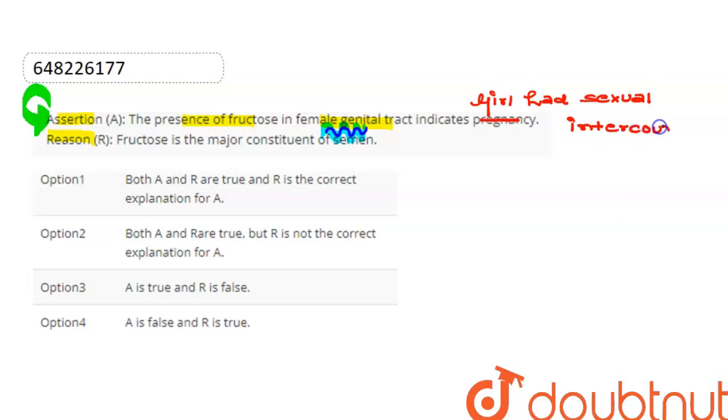This reason statement is correct. Since fructose is present in semen, if fructose is present in the female genital tract, it indicates that the girl had sexual intercourse.